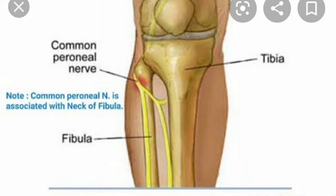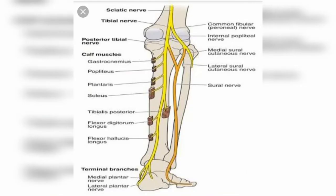The tibial nerve is the larger of the two divisions and continues its path vertically through the popliteal fossa. Its terminal branches are the medial and lateral plantar nerves.